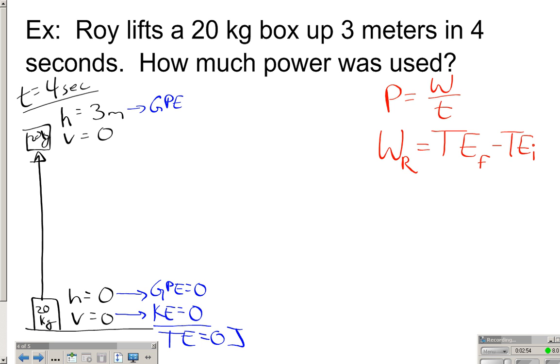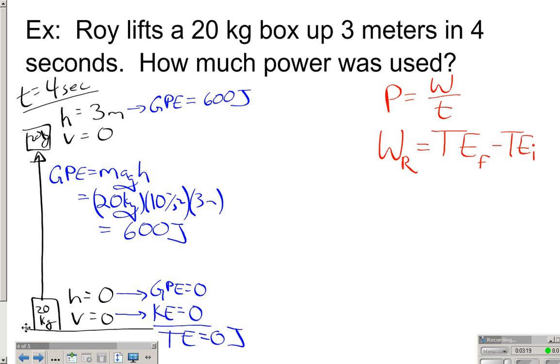So we should somewhere off to the side calculate how much. So let's do it. GPE is mass times acceleration of gravity times height. So the mass of the box is 20 kilograms. Acceleration of gravity is 10 meters a second squared, and the height is 3 meters. Multiply it out, and you will get 600 joules.